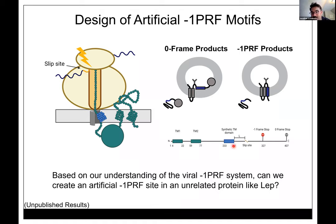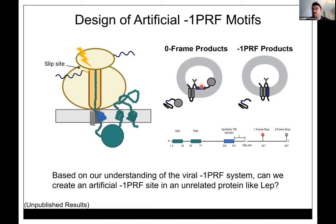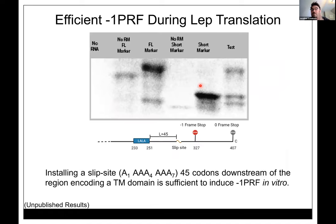In our in vitro translation system: the full-length protein produces glycosylated or untargeted versions; if a frameshift occurs, you hit a minus-one stop codon and cut off about 80 amino acids, giving a smaller product. Simplest design — no structural RNA element, just a slippery sequence 45 codons away. We were shocked: the first time we tried this, it happened. We see a major frameshift band — roughly 50/50 split between frameshifted and full-length protein. Moving the slip site to 35 or 55 codons away eliminates this low-molecular-weight frameshift product.